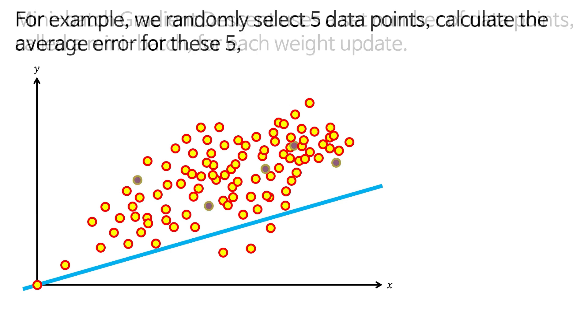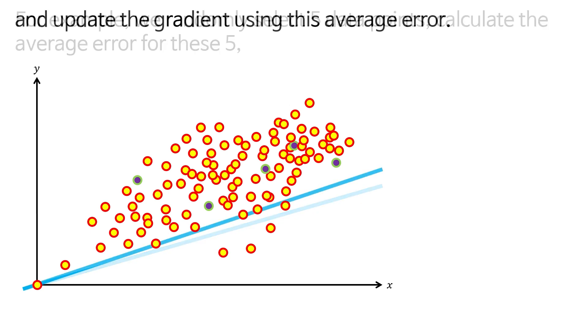For example, we randomly select 5 data points, calculate the average error for these 5, and update the gradient using this average error.